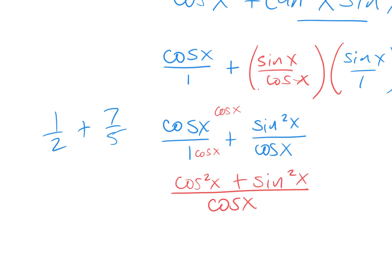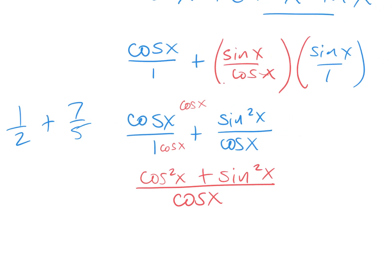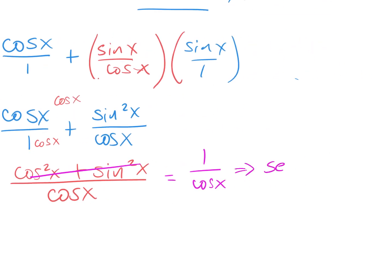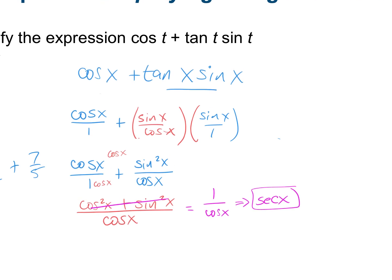Do I now have something that's squared with a plus sign? Yes — look at your Pythagorean identities. Cosine squared plus sine squared equals 1. So I can replace the whole numerator with 1, leaving 1 over cosine x. And what is 1 over cosine the same as? Secant. So your answer is secant x — you started with that big expression and ended with secant x. Those two things are equivalent.